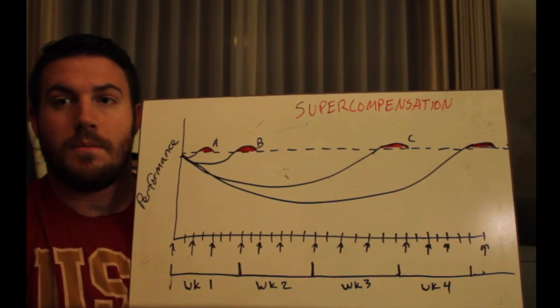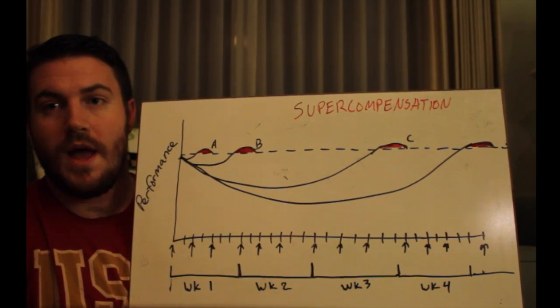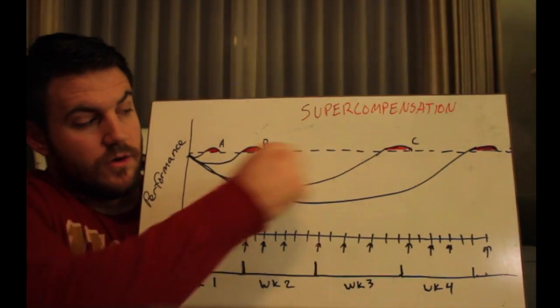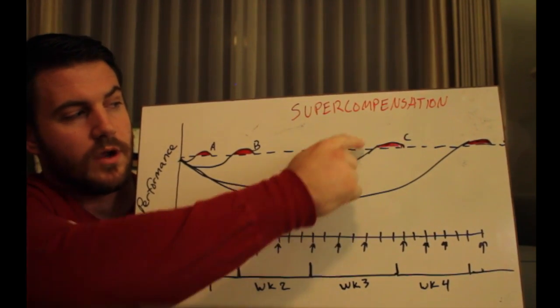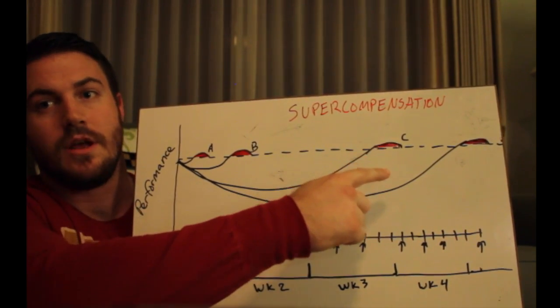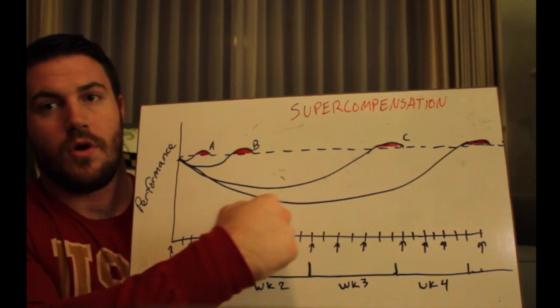Which is many microcycles put up against each other in a logical way to again create this overload, recovery, and supercompensation on a much longer and drawn-out scale.